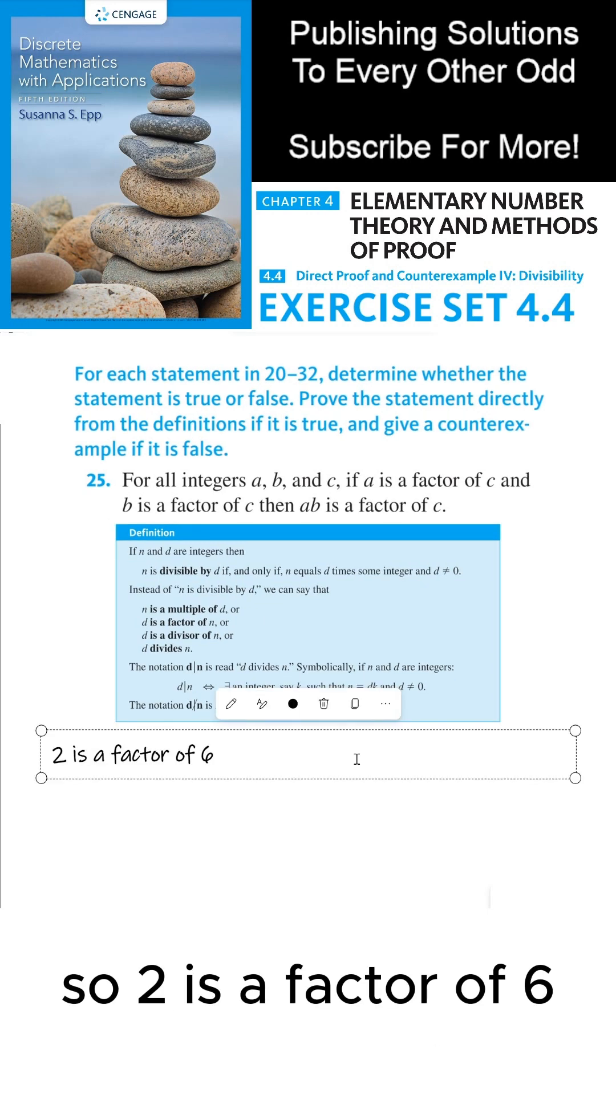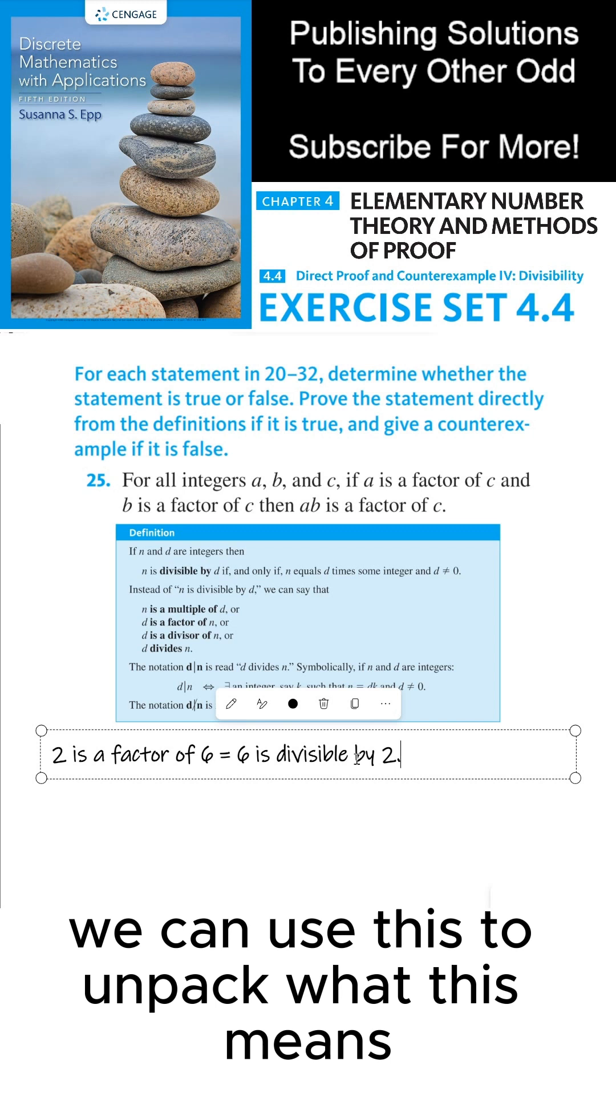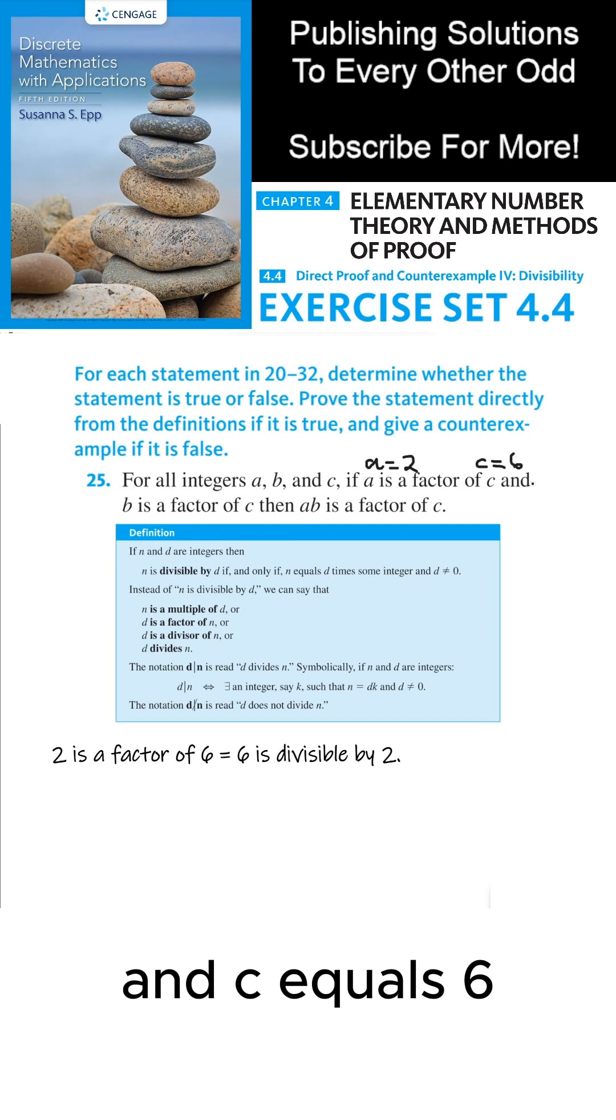So 2 is a factor of 6 means that 6 is divisible by 2. We can use this to unpack what this means. So if we let a equal 2 and c equals 6, then 2 is a factor of 6. That's true.